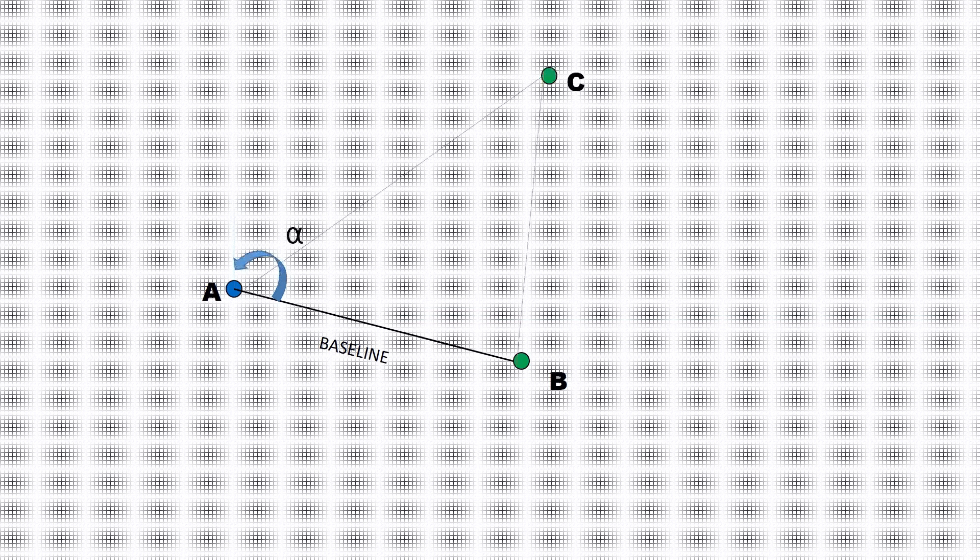This line AB becomes the baseline for the trilateration purpose. The method is performed by placing the total station on A by an operator and the reflector on B by another helper.